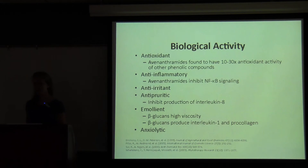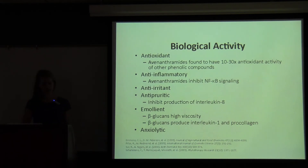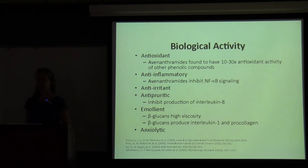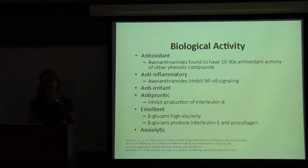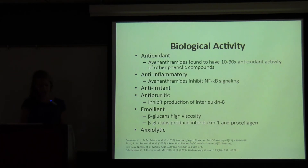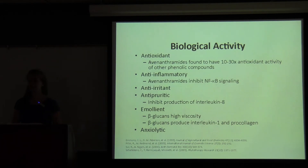Oats also have emollient properties based on beta-glucans' high viscosity. Beta-glucans can penetrate the dermis layer of the skin and produce collagen, which has also been important in the reduction of wrinkles. And finally, oats have also been found to have anxiolytic properties as well.